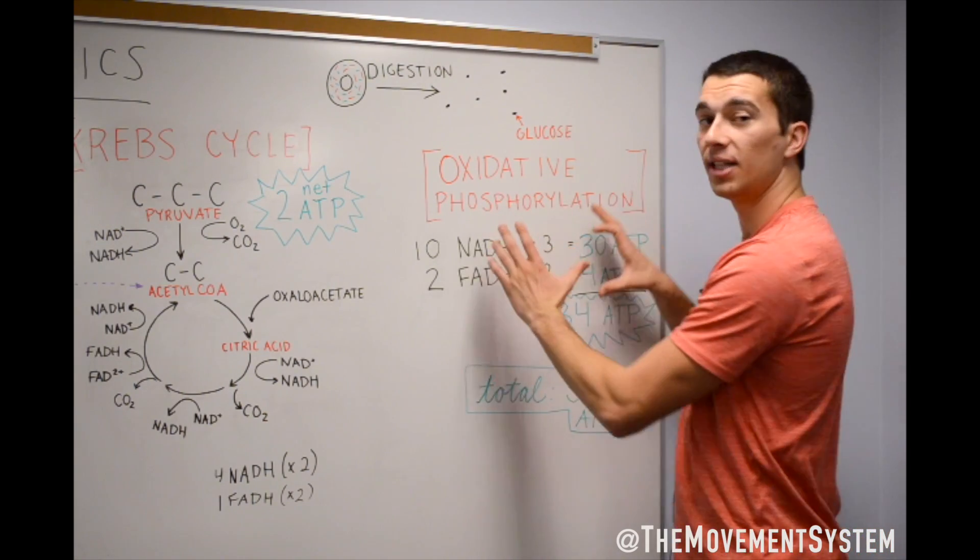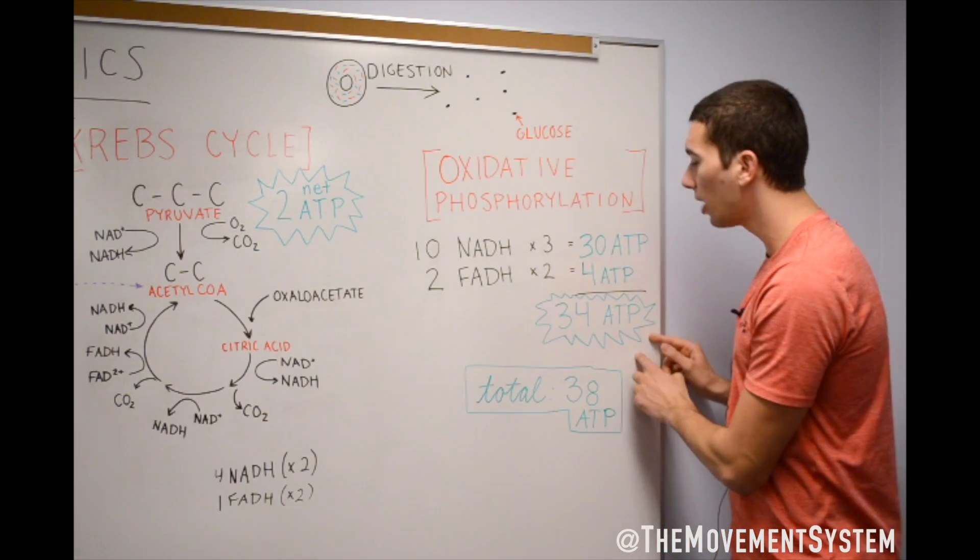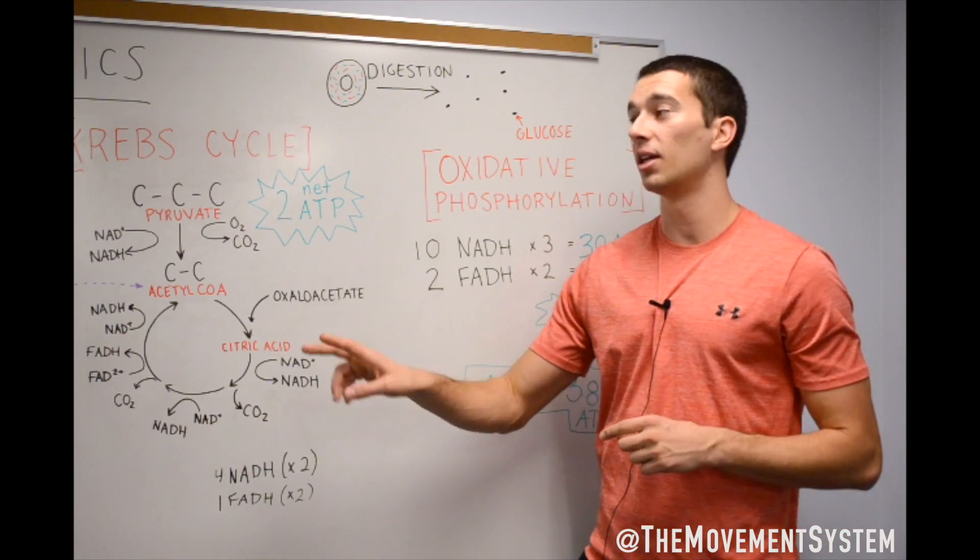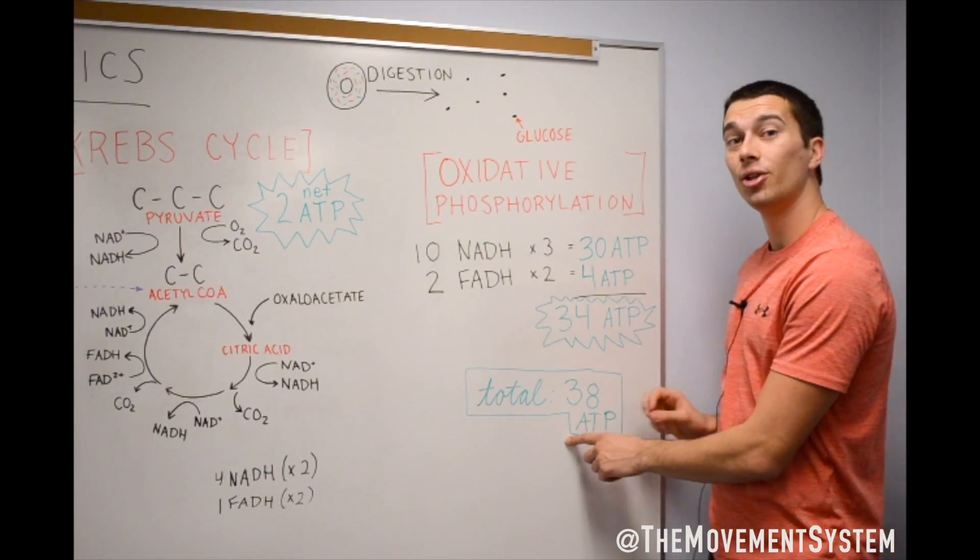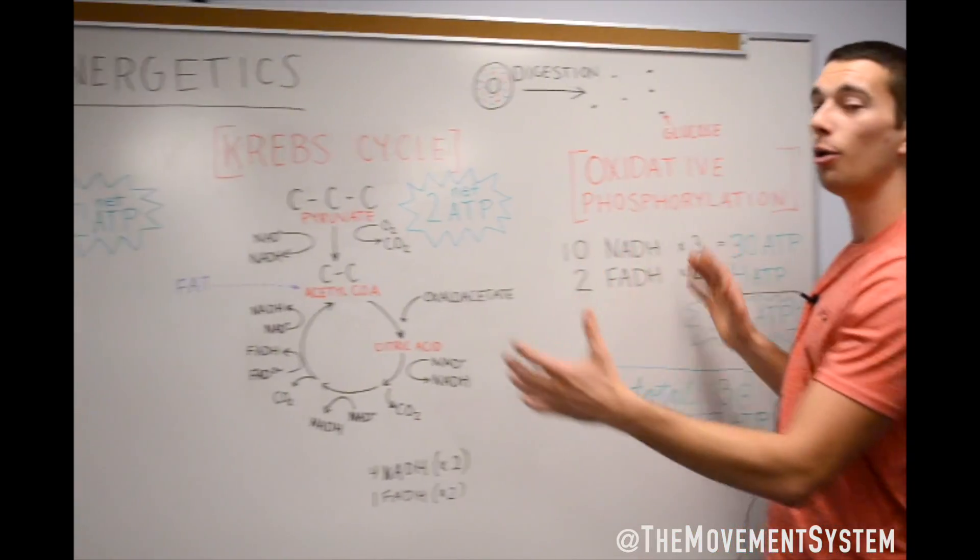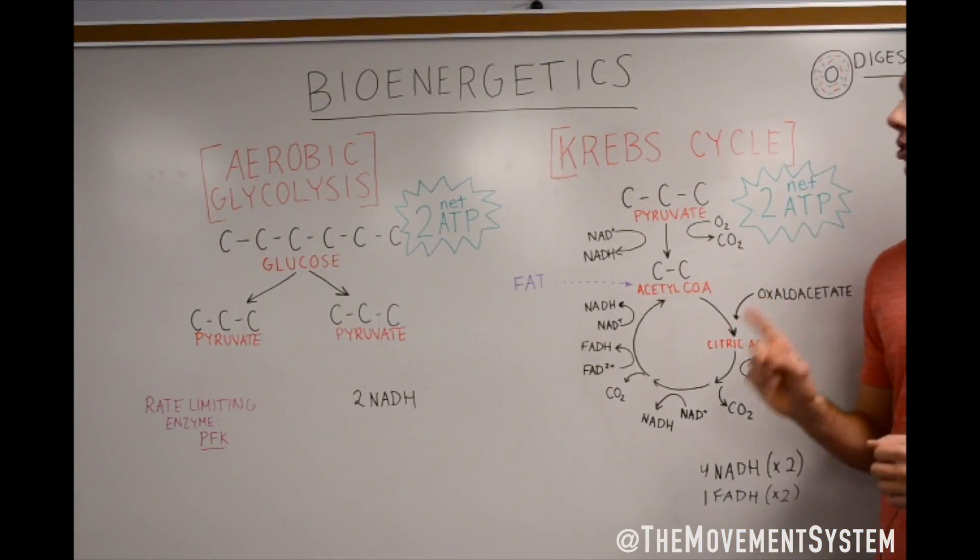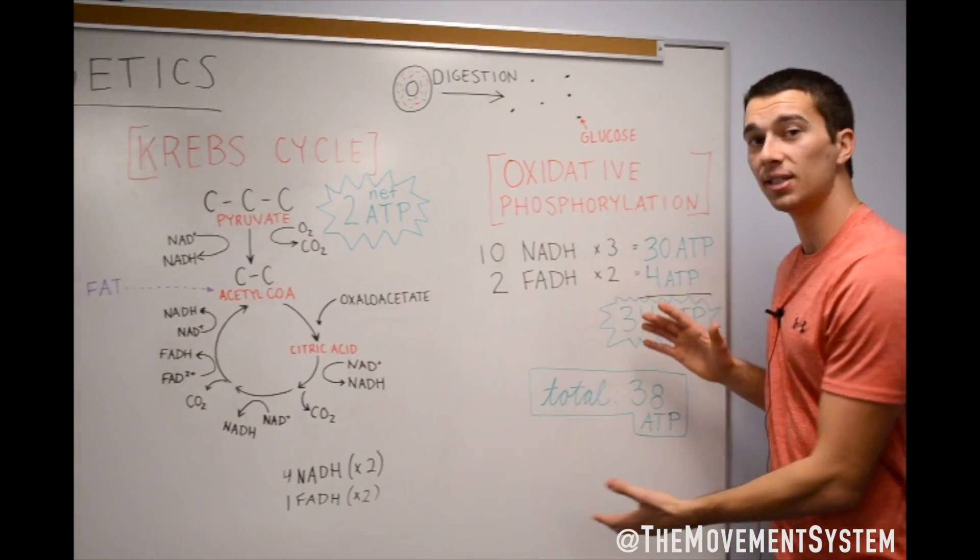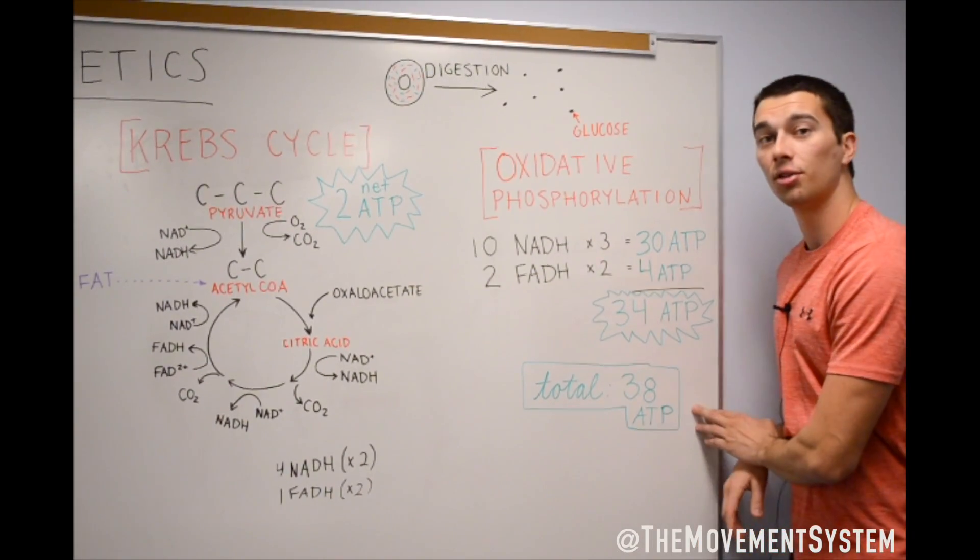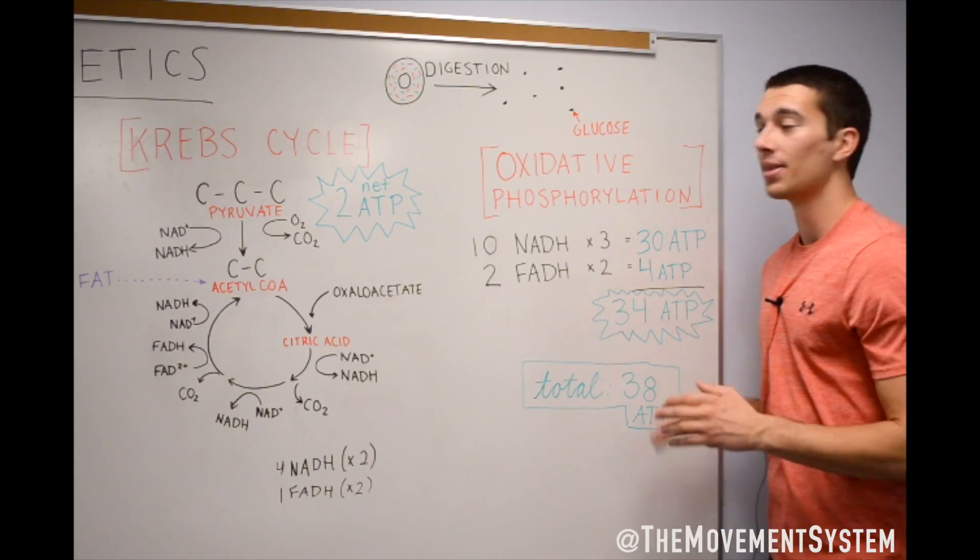So, just from oxidative phosphorylation, we're getting 34 ATP. But if you account for the two from the Krebs cycle, the two from glycolysis, we get a total of 38 ATP from the whole process. So, one glucose molecule broken all the way down through all the steps, again, within the presence of oxygen, gives you a total of 38 ATP net.